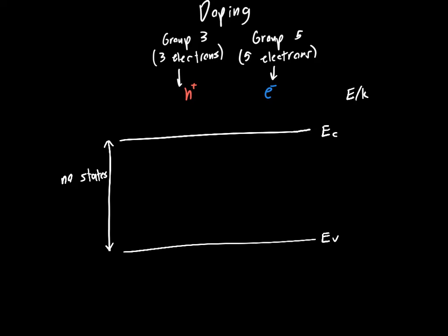But what we do when we add a dopant is we essentially add a state. So we add a bunch of states that are very close to the conduction band, and that initially contain an electron. We've got a bunch of states that each have an electron.